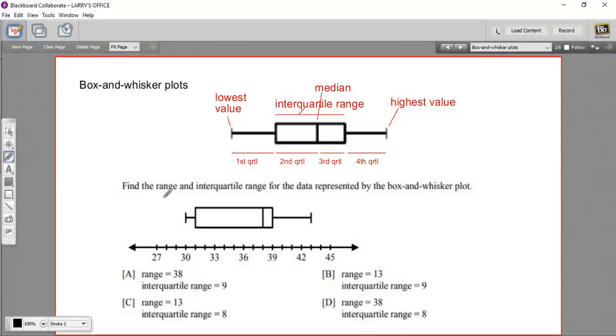So in this first one, it says find the range and interquartile range for the data represented by the box and whisker plot. Well, the range is just going to be the difference of the lowest and the highest. So let's see. What does this look like? 43 for the highest and 30 for the lowest. So that's a difference of 13. So our range here is 13. It looks like it could be either B or C.